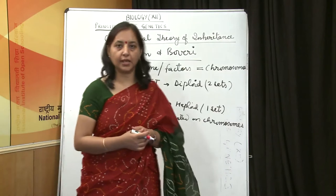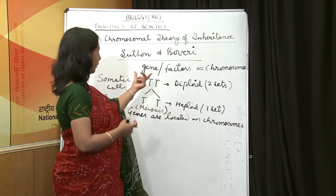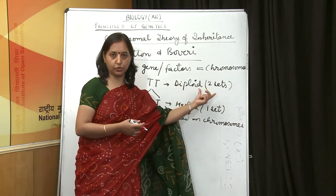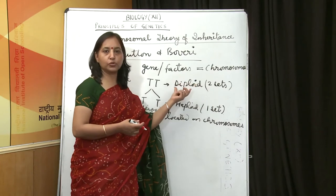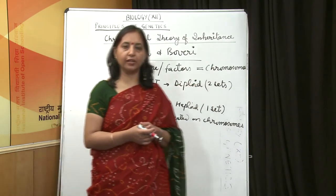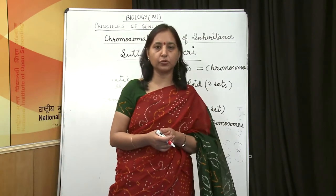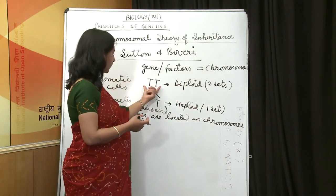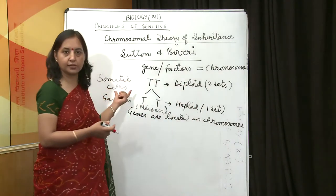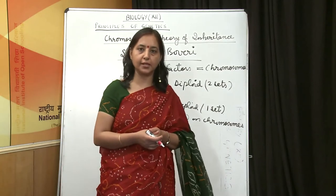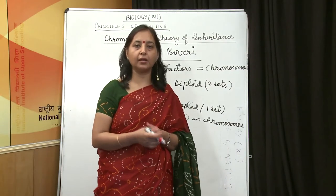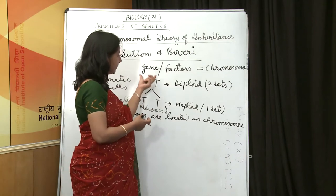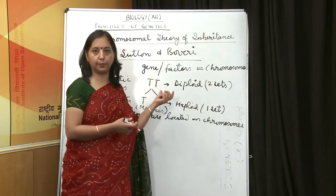The diploid condition means having two sets of chromosomes, wherein one chromosome is received from the father and the other chromosome is received from the mother. This diploid condition is found in somatic cells — all the body cells — where double the number of chromosomes are present. Similarly, the genes are also diploid.